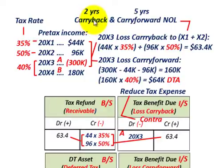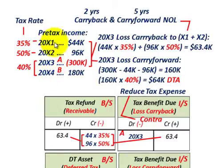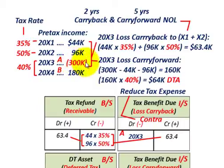We're going to look at a basic example with a carry back and carry forward of net operating loss and how we'd handle this for tax purposes. We're going to have some pre-tax income shown for four years, 20x1 through 20x4, concentrating on year 20x3 where we have a net operating loss of $300,000.